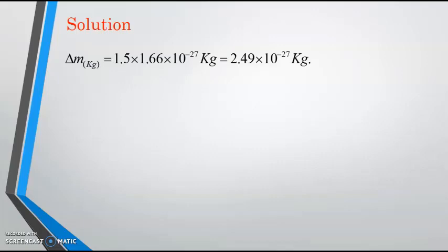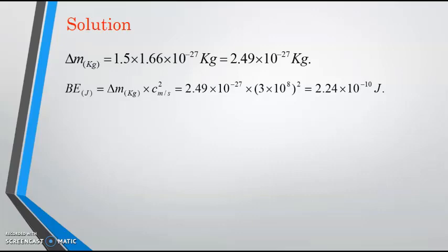We're going to find energy in Joule: delta M in kg multiplied by C in meter per second squared. We're going to find energy in Joule: 2.24 times 10 to the power minus 10 Joule.